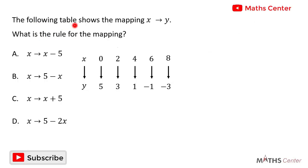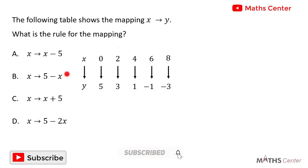The following table shows the mapping x to y. What is the rule for the mapping? This is a multiple choice question, so we solve the question and after that we will pick the correct option. We have x to y: 0 gives us 5, 2 gives us 3, 4 gives us 1, 6 gives us negative 1.